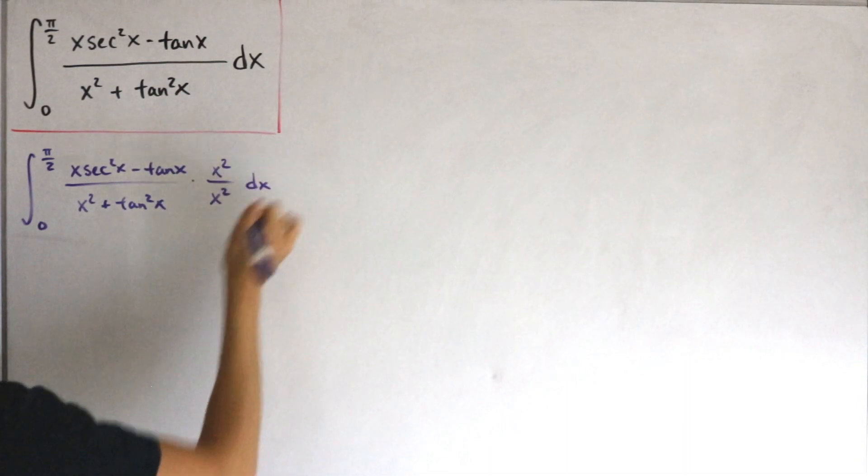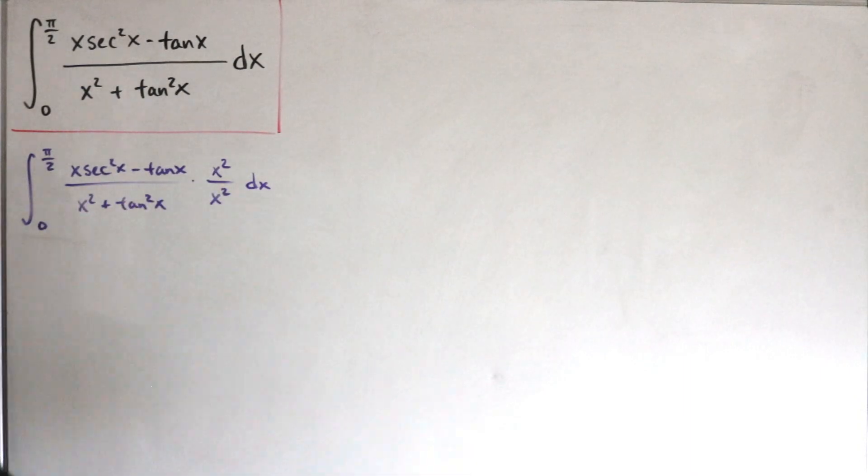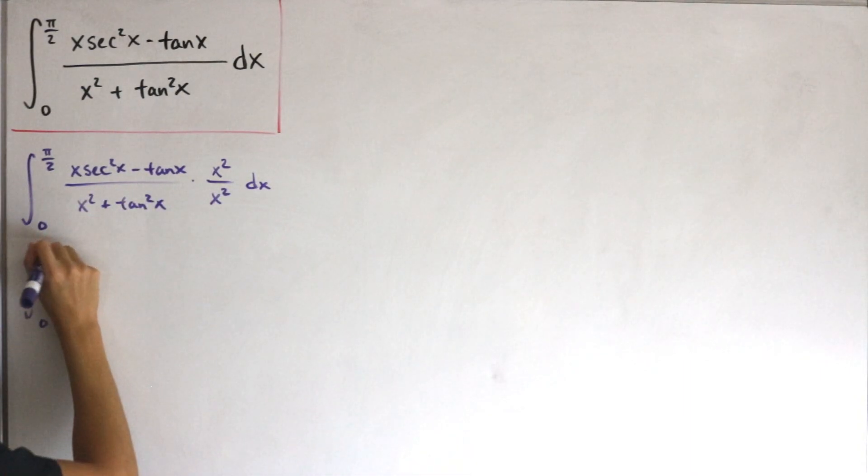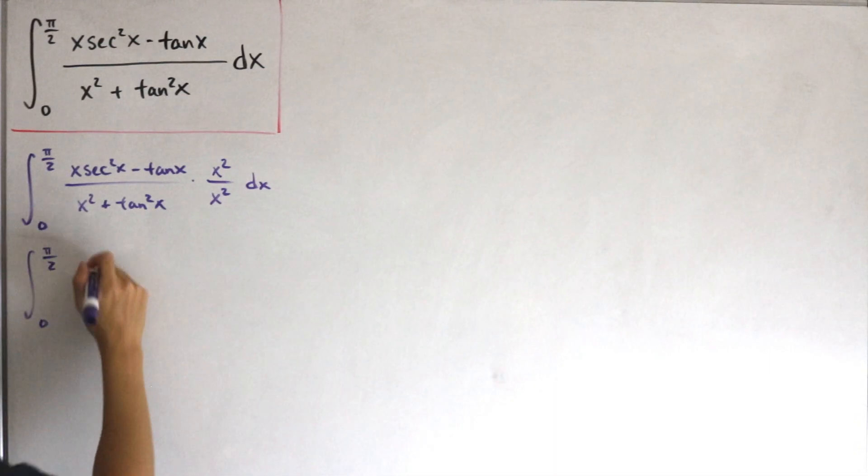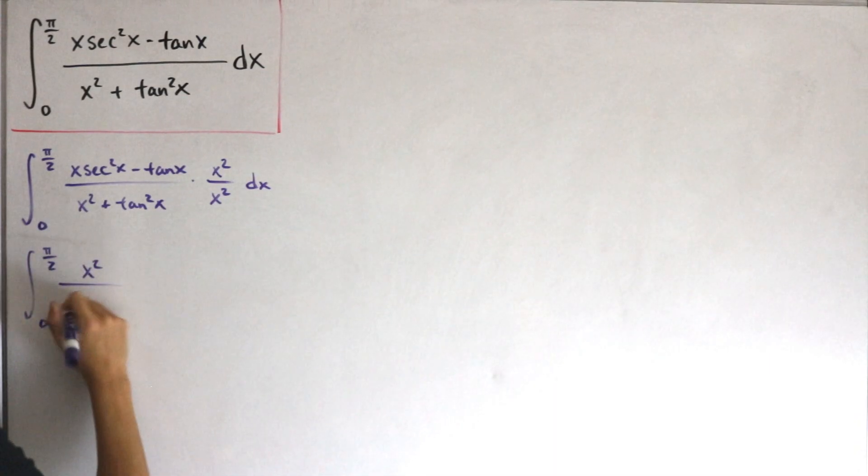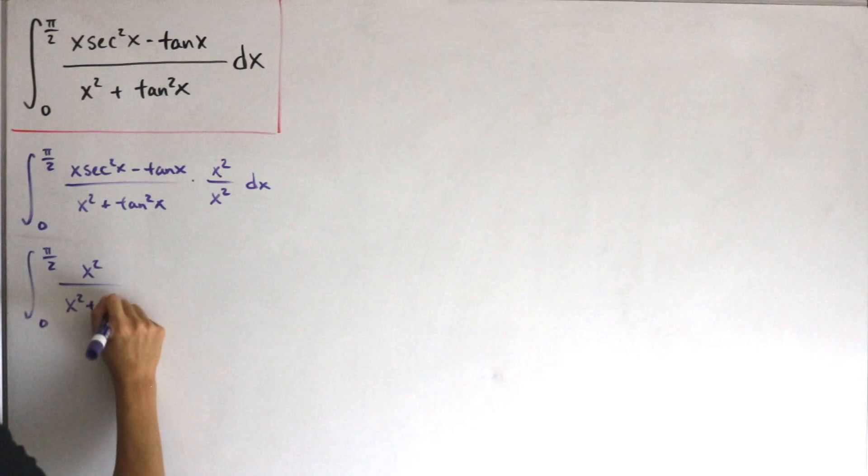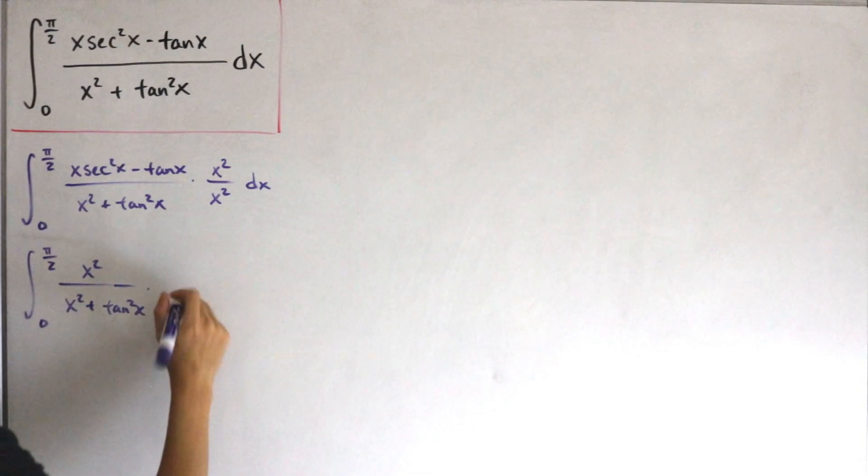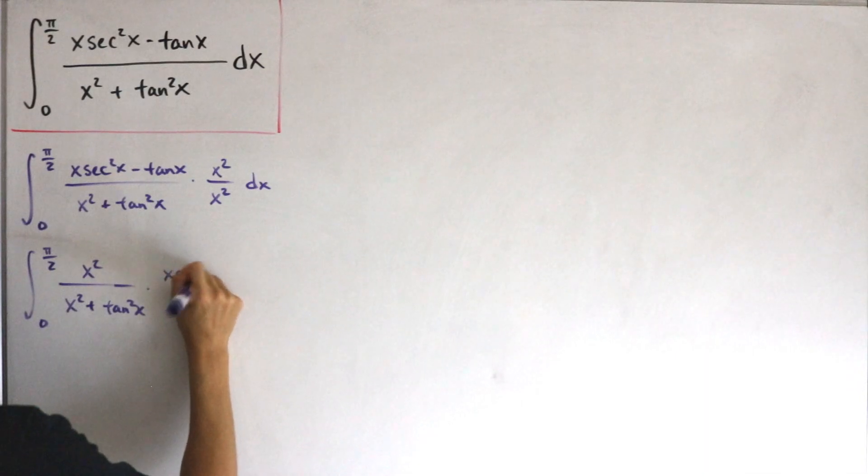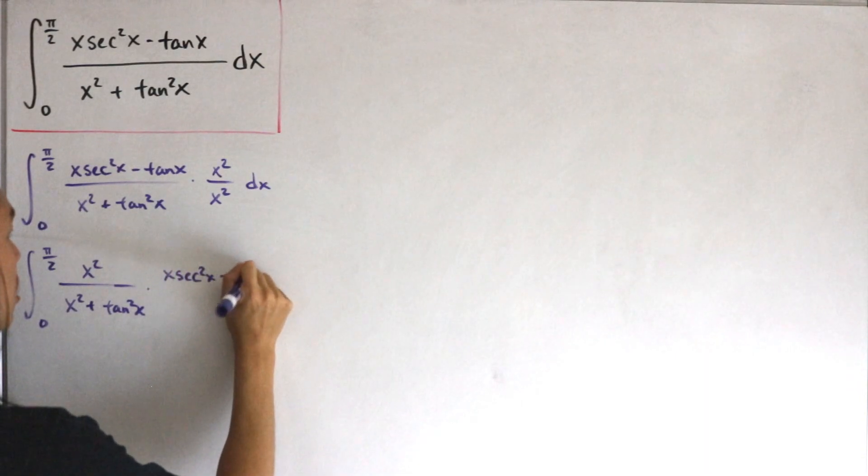And what that does is we can separate this as a product of functions. Specifically, from zero to π/2, we'll have x² divided by x² + tan²x, then multiply this with x·sec²x - tan x.